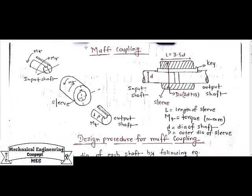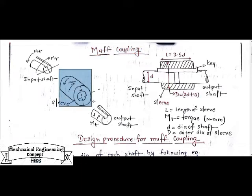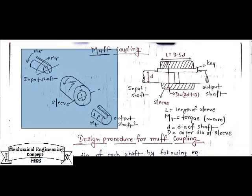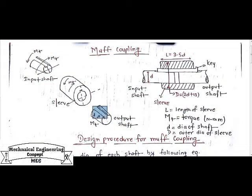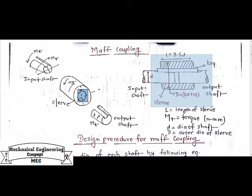MOF coupling is a rigid type coupling. It is a part of rigid coupling in which the sleeve or MOF is used to connect the input and output shaft. This is the 3D representation of that coupling. In the input and output shaft there is a keyway, and this sleeve or MOF is used to connect the input shaft and output shaft to transmit power, as discussed earlier in basics of coupling and types of coupling.